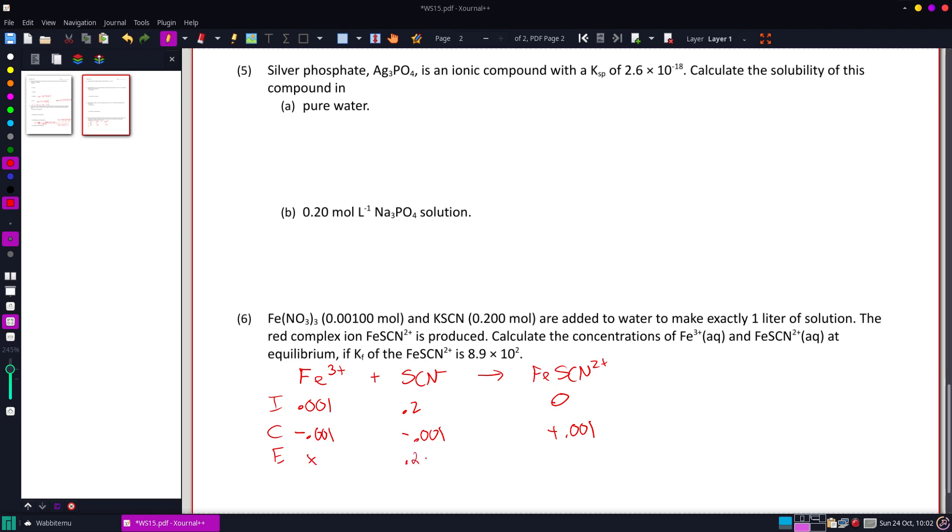This is going to be 0.2 minus 0.001, or 0.199, and this is just going to be 0.001. All right, so our K for this equation does have that iron biocyanide all over just the iron and the SCN, and we are going to solve for our Fe, the X, to see how close to zero it actually is.